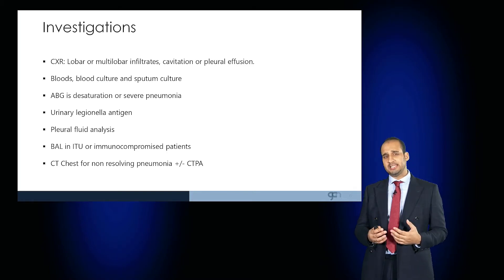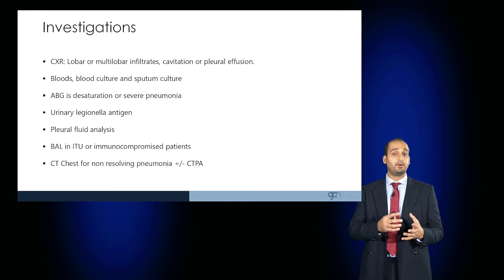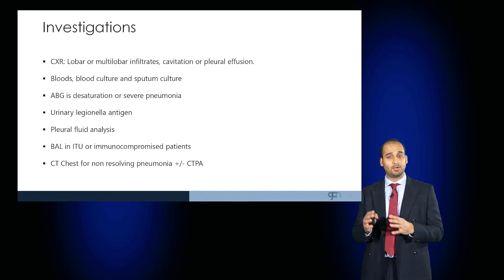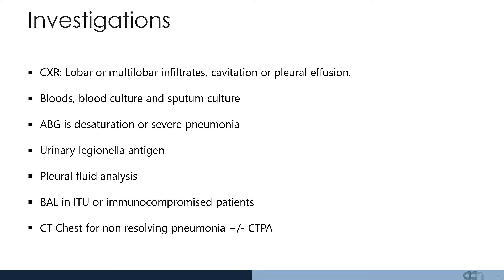In terms of investigating these patients, a chest radiograph would demonstrate lobar or multilobar infiltrates, or cavitations, or pleural effusions. The bloods would suggest raised white cells, raised inflammatory markers, and you would expect an increase in the lactate, CRP, urea, and liver function tests would also be important to determine whether or not the patient is septic.